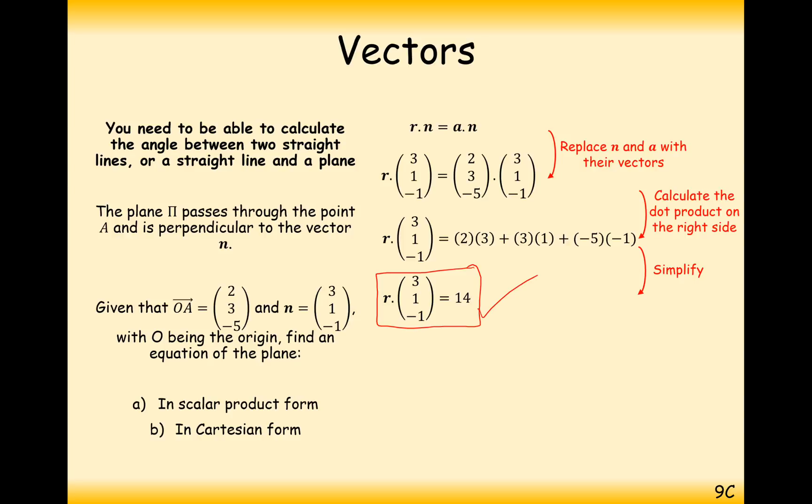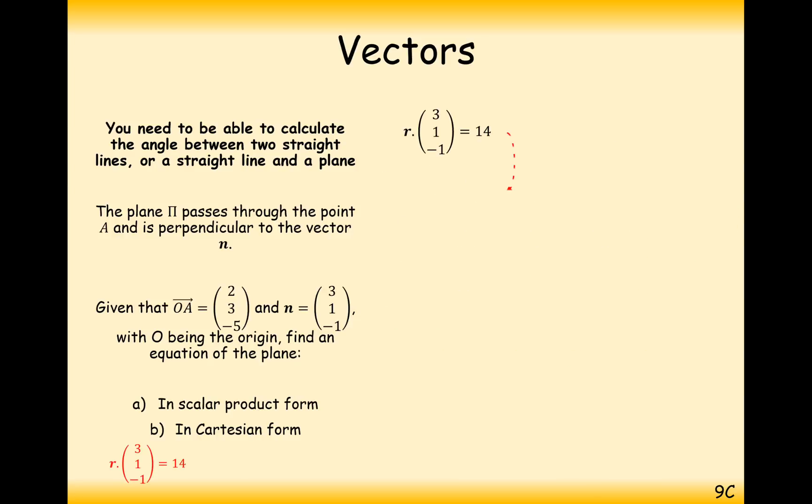r.31 minus 1 equals 14. And to convert this into Cartesian form, all we need to do now is take this form, replace r with x, y, z.